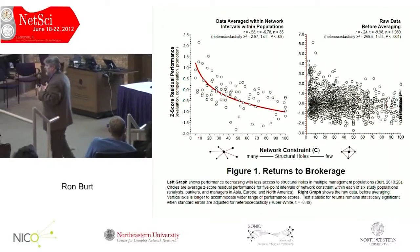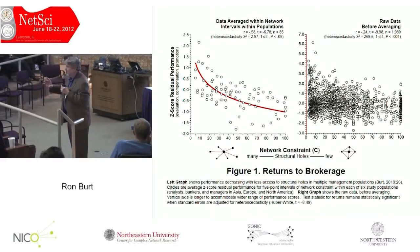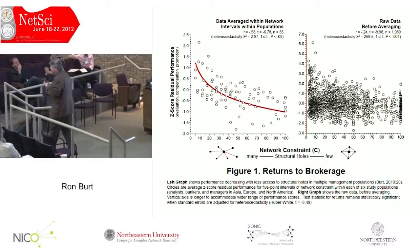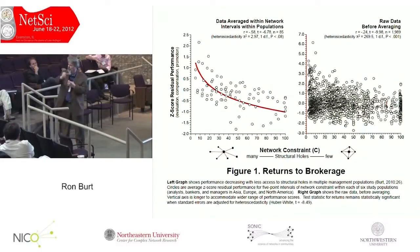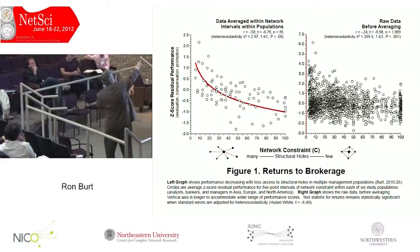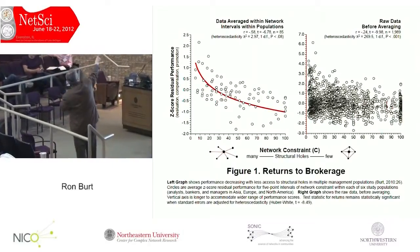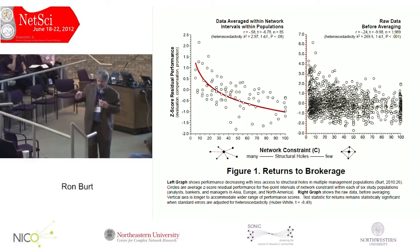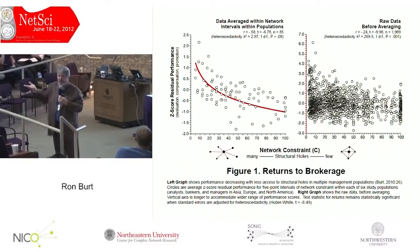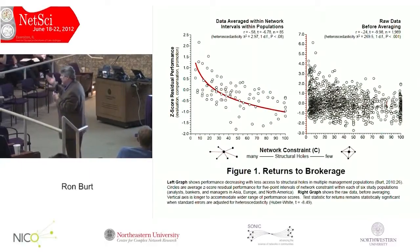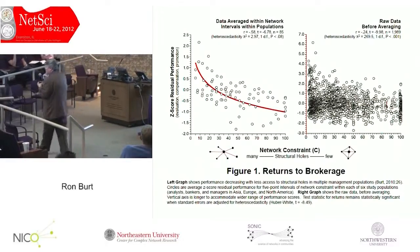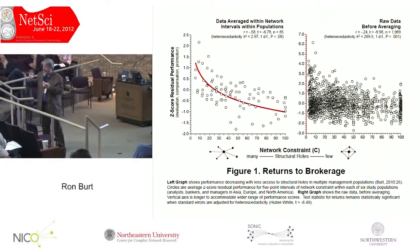The people connected to others who are not already connected are rewarded by organizations — they make more money, they're promoted more quickly, industries reward them with recognition. No matter how we look at who's doing well and who's doing badly, the hubs do better, holding constant a variety of background variables. The vertical axis: zero means you're getting paid and recognized what's typical for someone like you; one means you're one standard deviation ahead; negative one, you're one standard deviation behind. That downward sloping curve shows network hubs are rewarded.